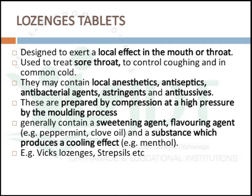Lozenges are designed to exert a local effect in the mouth or throat, used to treat sore throat, control coughing, or in the common cold. They mainly contain local anesthetics, antiseptics, antibacterial agents, astringents, as well as antitussives. They are prepared by compression at high pressure or by molding process. Generally they contain a sweetening agent, a flavoring agent like peppermint or clove oil, and substances which produce a cooling effect like menthol. Examples are Vicks lozenges and Strepsils lozenges.